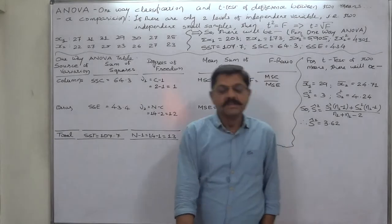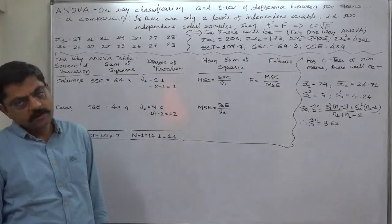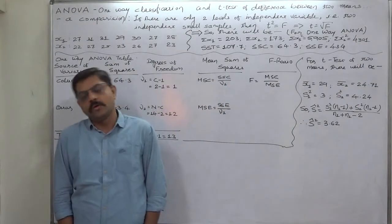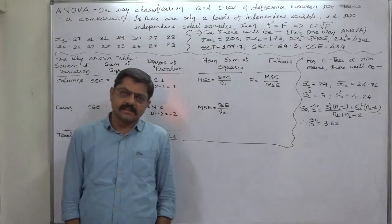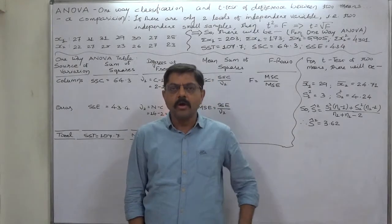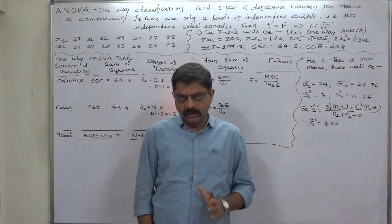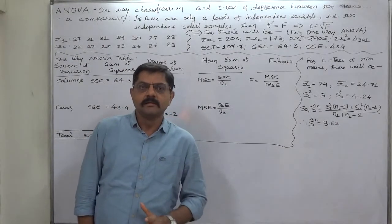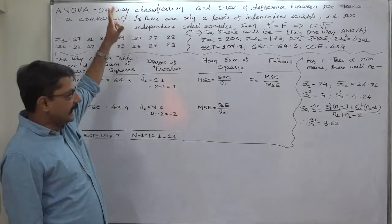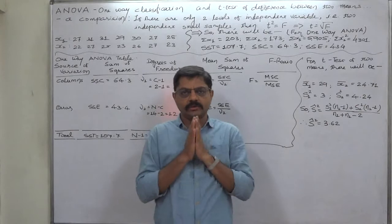Hello, namaskar and welcome. Since the last few lectures we have been discussing analysis of variance, popularly known as ANOVA. We have already discussed one-way classification as well as two-way classification. Now, at the end of our discussion on ANOVA, let's discuss a topic which is hardly known — very few people know about it and very few teachers discuss it, but it is a very important conclusion. We are going to compare the concluding results of two different tests: one-way ANOVA and the T-test for difference between two means.